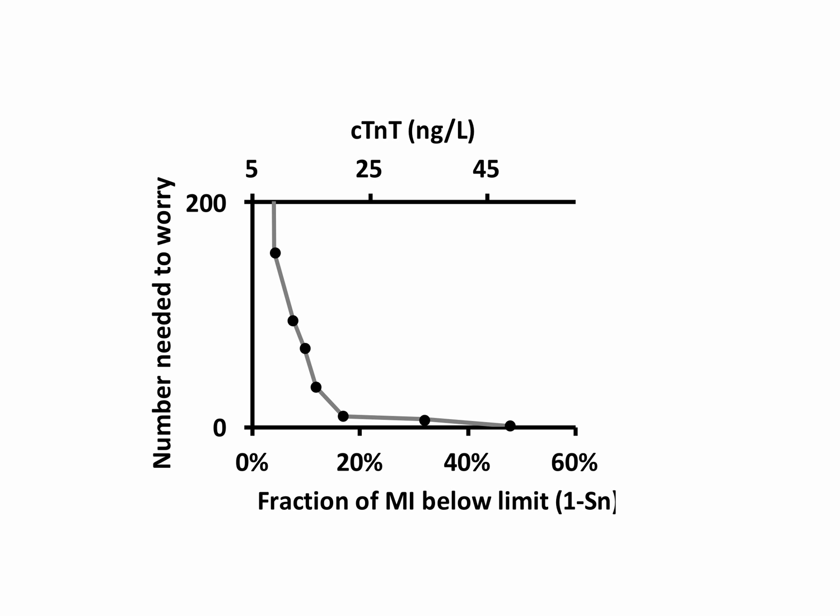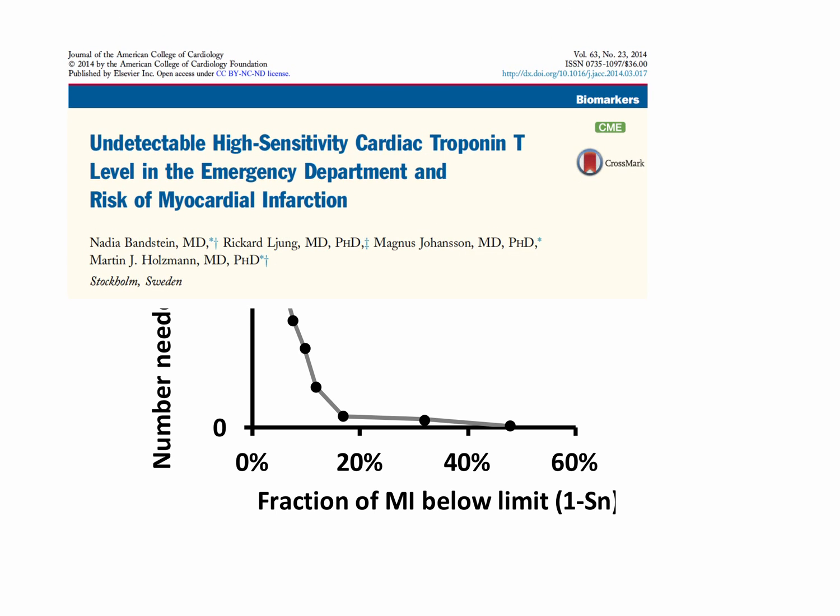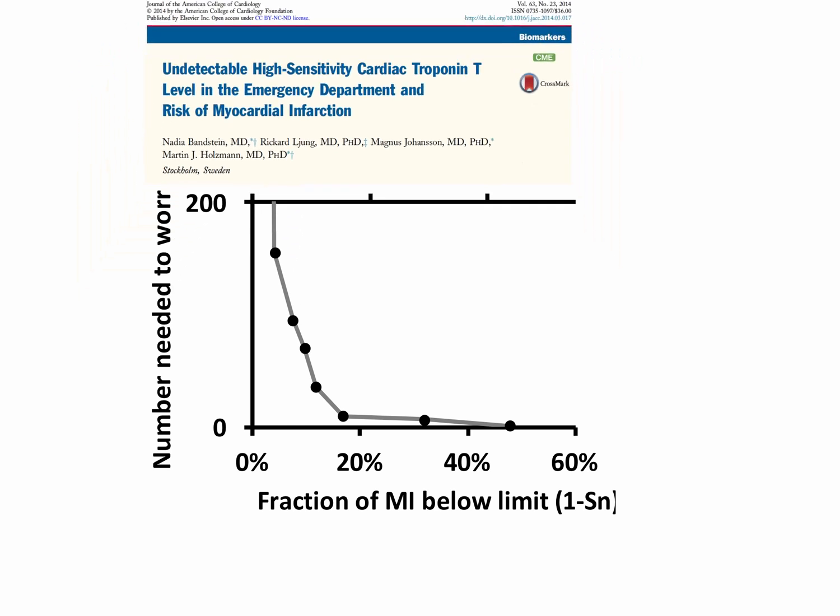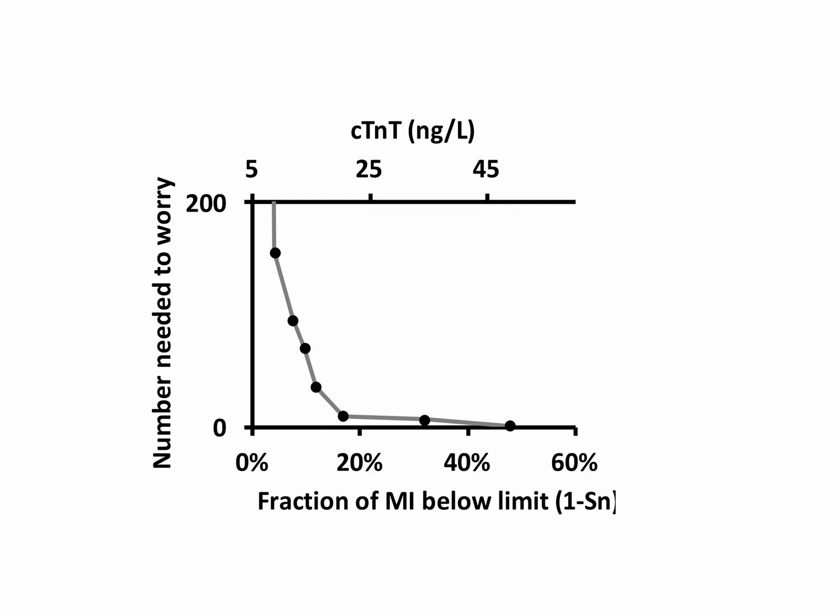As number needed to worry increases, we also need to factor in the risk of complications during hospital care. Studies by Martin Holtzman's group at Karolinska Hospital in Stockholm, Sweden indicate that chest pain patients with Troponin T-levels below 5 nanograms per liter and normal ECG stand a greater risk of myocardial infarction induced by coronary angiography and intervention than the risk of being sent home with a missed myocardial infarction.